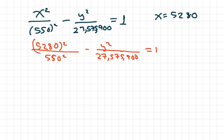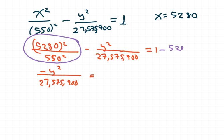So I'm just going to do it the same way. So we're going to get negative Y squared over 27,575,900 equals, I'm going to go, I went ahead and subtracted this on my calculations. So it's 1 minus 5,280 squared. I know I'm not supposed to do it this way, but I'm trying to save time. So over 550 squared. And I went ahead and did that and I got negative 91.16.